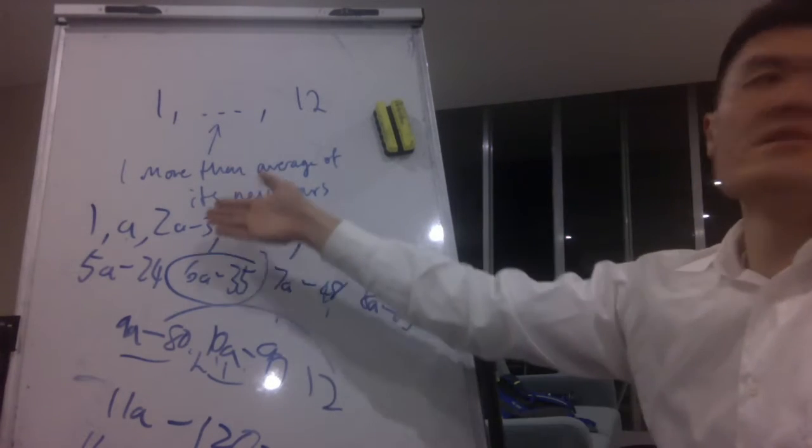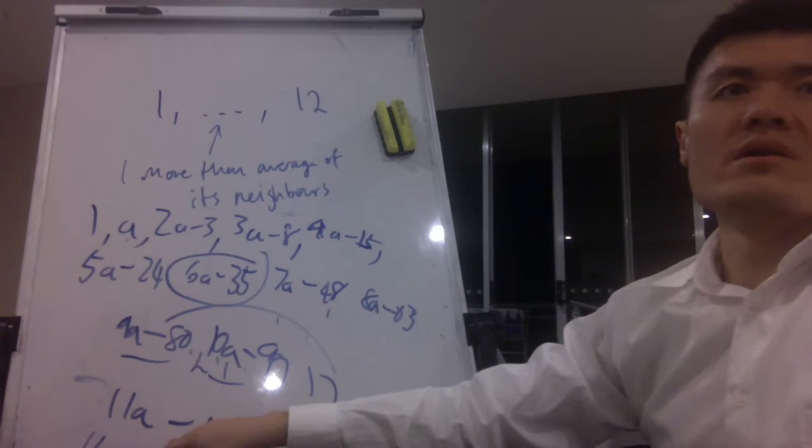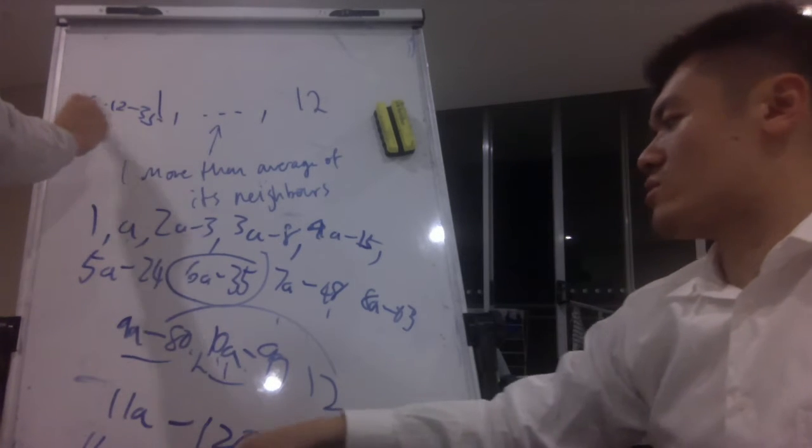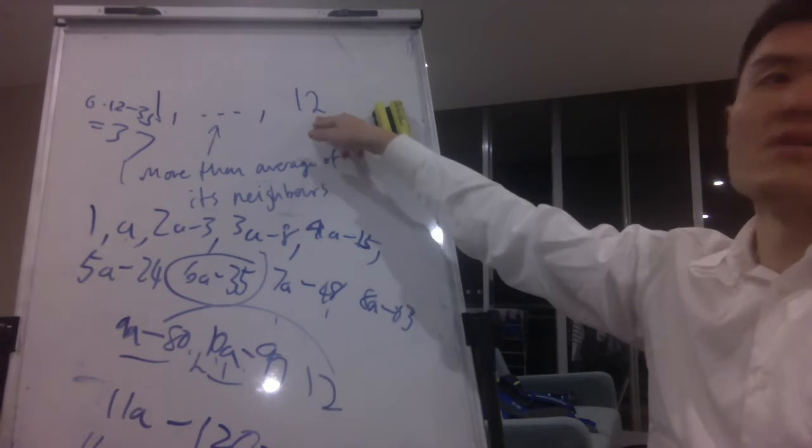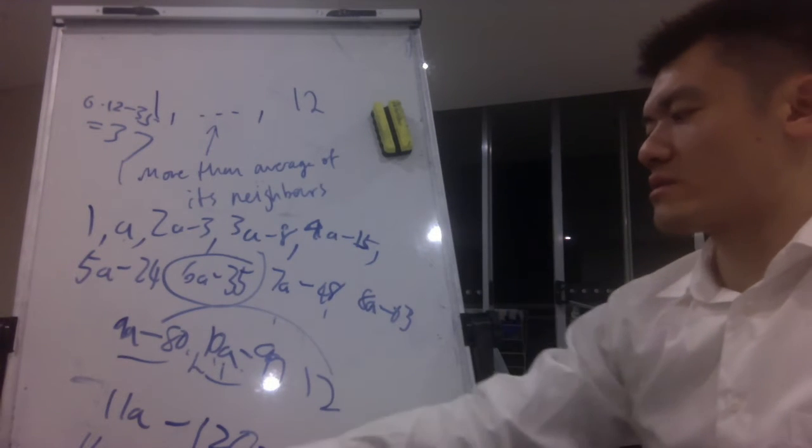Anyway, so it's an easy pattern. And by the time you get to 12, it'll be 11a minus 120, right? So if 11a minus 120 is the 12th term, it has to equal 12, because you know the last term is 12. So if your 11a minus 120 is 12, then a has to be 12.